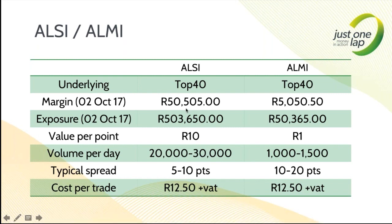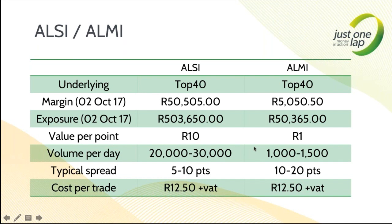Cost of transaction is the same: 1,250 plus VAT, which includes booking fees — that's 1,445 rand total. On the ALSI, 1,445 is about one and a half points when you buy and one and a half when you sell. On the ALMI, 1,445 is 15 points when you buy and 15 points when you sell. If you're testing a system on the ALMI, don't look at your P&L — look at the points you've made. On the ALSI, in and out is 3 points; on the ALMI, it's 30 points, so you're 27 points behind. That will give you a better indication of how ALMI trading will convert to ALSI trading.